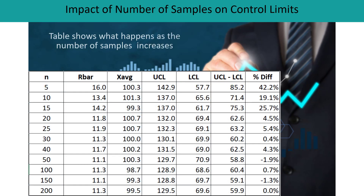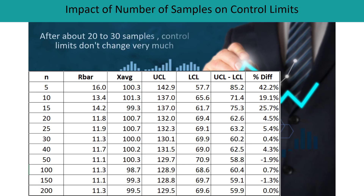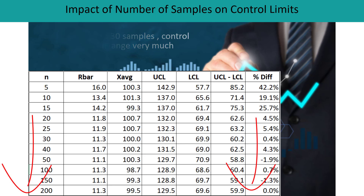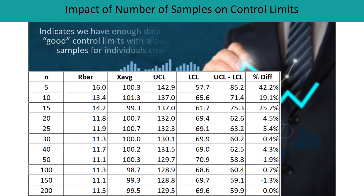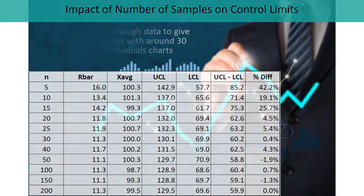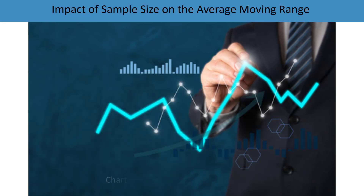Here's a table that shows the impact of the number of samples on control limits. The first column is sample size; it shows the average range and average moving range. You can see when we get to 20 to 30 samples, the control limits don't change very much — there's very little difference. The last column is the percent difference compared to 200 samples, and you can see when you get to about 20, there's not going to be a whole lot of change. So we tend to have enough data for good control limits from around 20 to 30 samples.